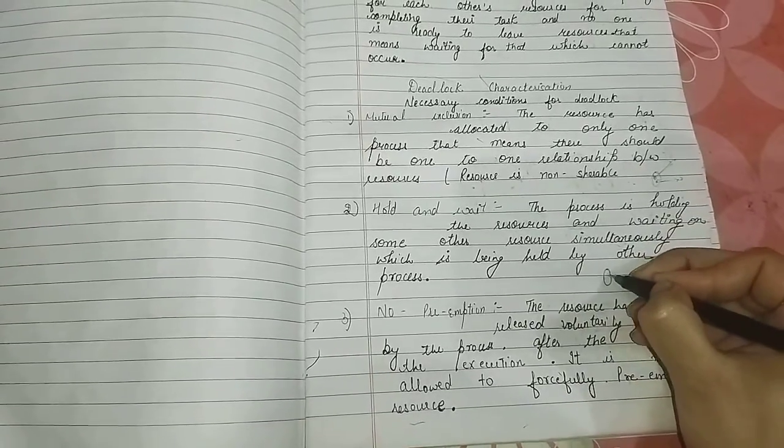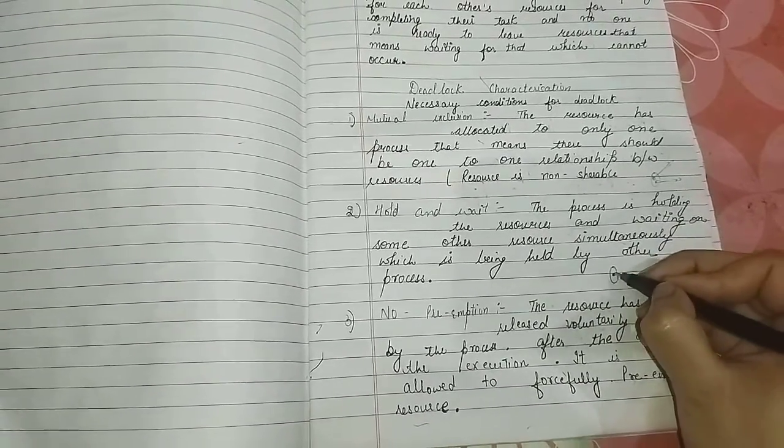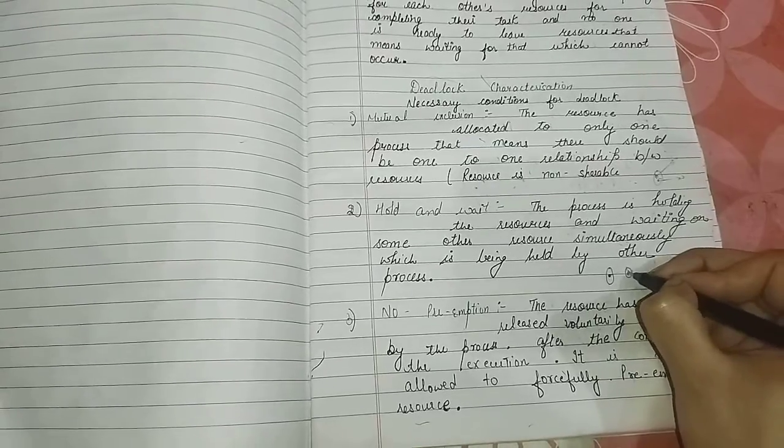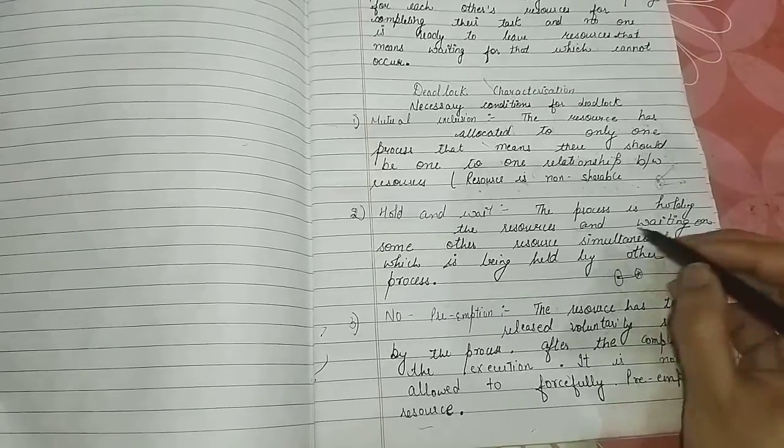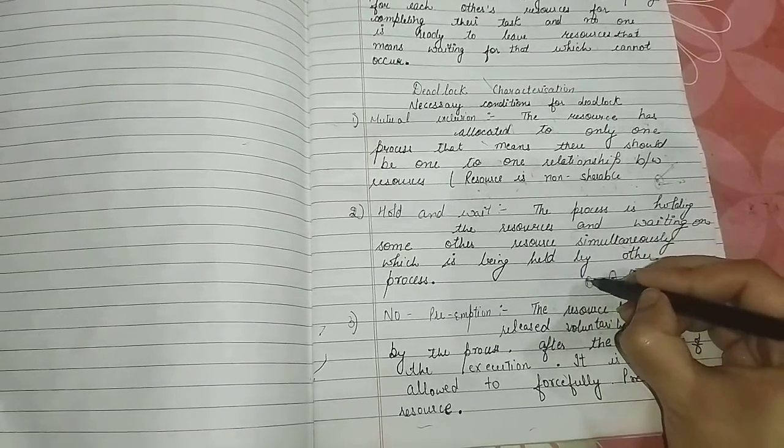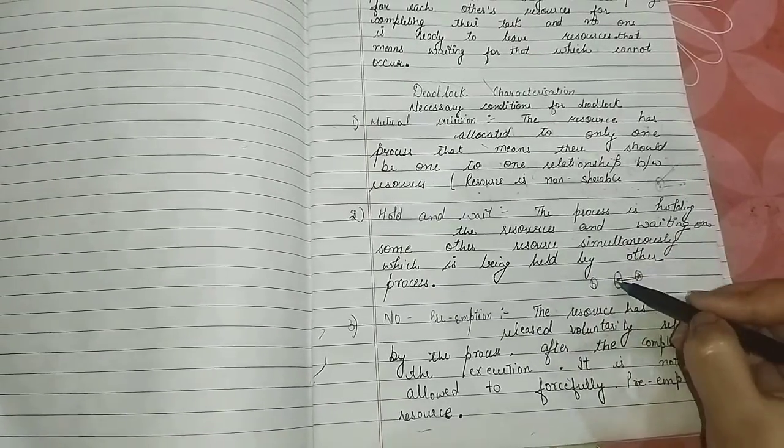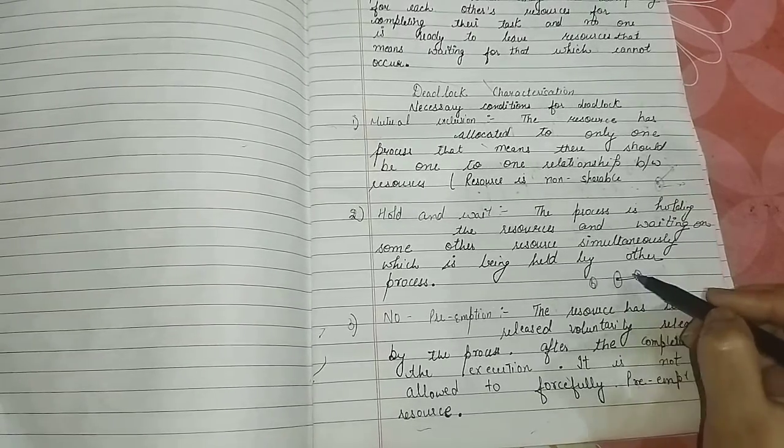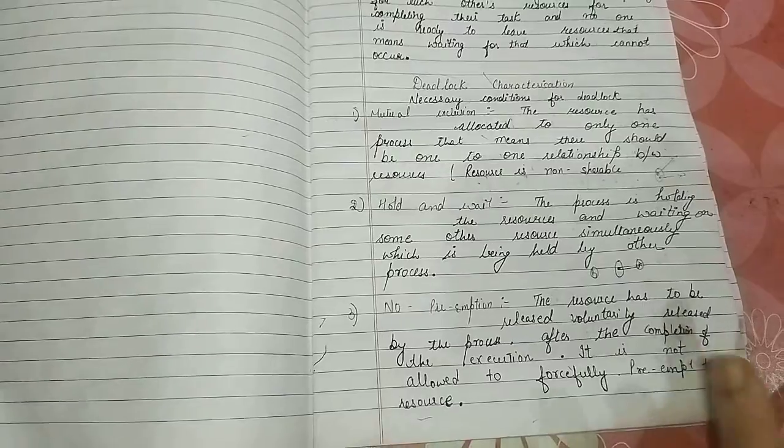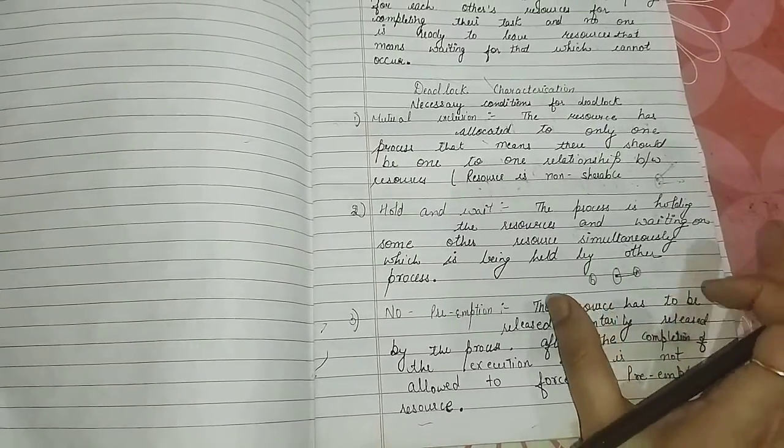Which is being held by other resources. Suppose now this is another resource, now this is a resource, then it will give to one. Process is holding the resource, it holds the resource, and waiting on some other resource. Now B also needs. So this comes to hold and wait. Simultaneously which is being held by the process.